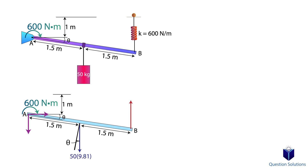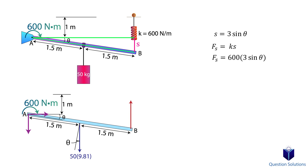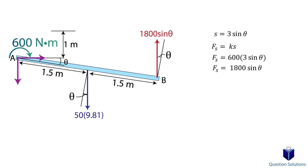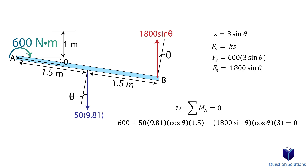Now we have to put on our thinking caps. Initially, this spring has an unstretched length of 1 meter. In the second state, when everything moves, the spring stretches. Drawing a right angle triangle, the length of the stretch is the opposite side, so we use sine to figure it out. What we found is the length the spring stretched. To find the force, we use Hooke's law — the stiffness is 600 N/m. We actually only need a single moment equation about point A, which gets rid of the two unknown reactions and leaves only the angle to be found, since we know all the other forces.